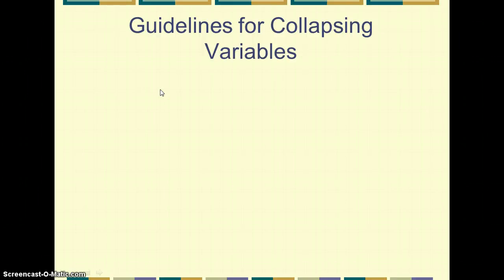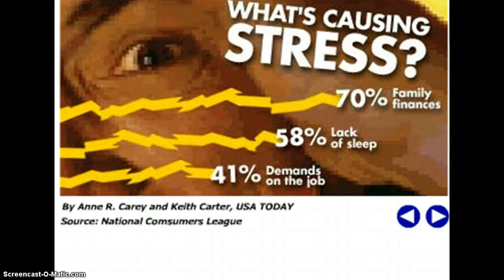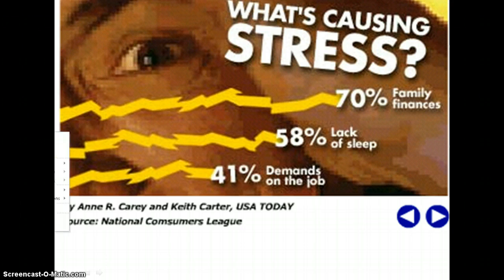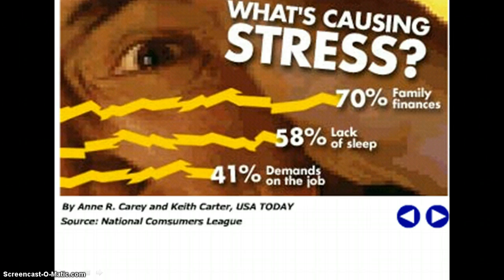We're still talking about how we would work with different sorts of visual representations of data. In the last screencast, I was just starting to talk about some of the ways that data is visually represented in the media. There's a newspaper in the United States called USA Today, which is well known for these infographics where they display different sorts of statistics in some visually jarring way, as you can see here.